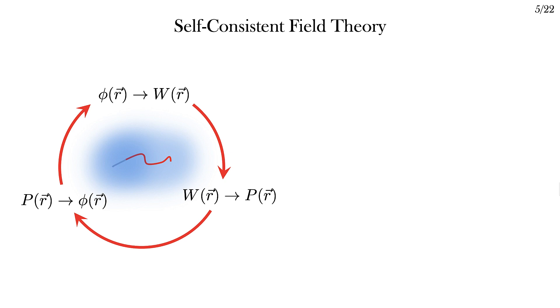From the potentials, I can calculate the statistics of lipids using standard polymer physics techniques, which preserve the connectivity of the chains. This, in turn, gives me probability distributions of monomer types and, therefore, concentrations.